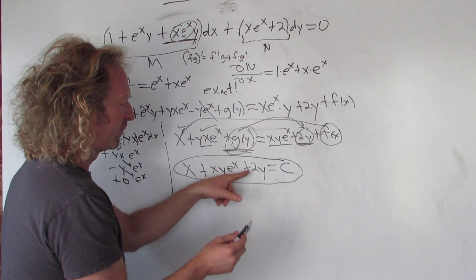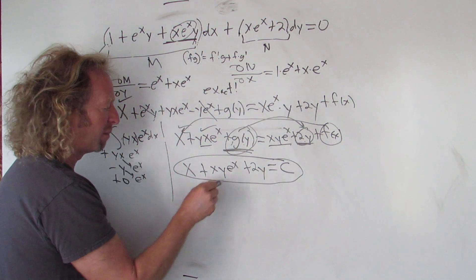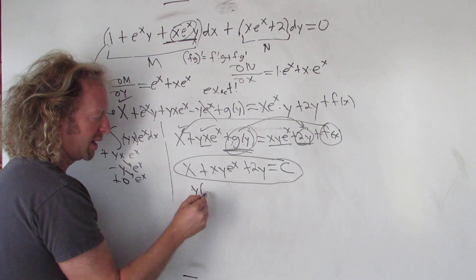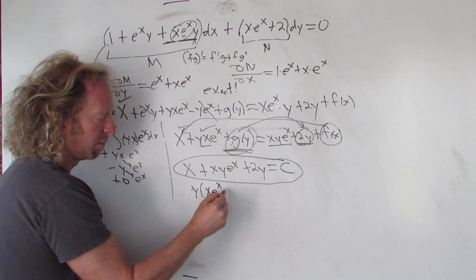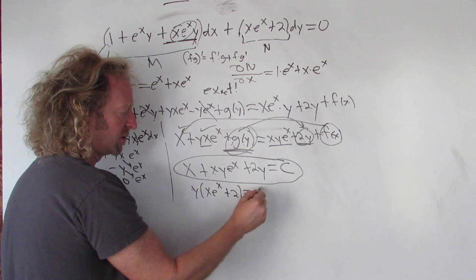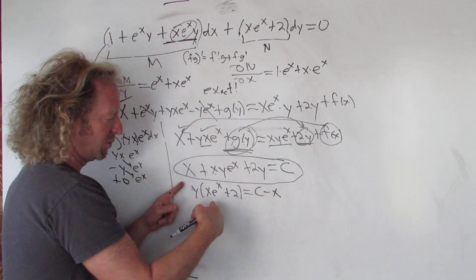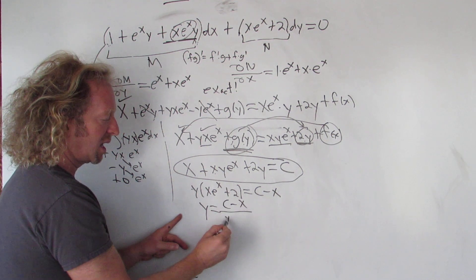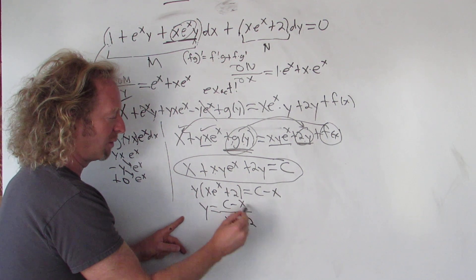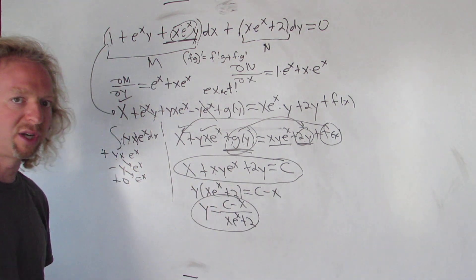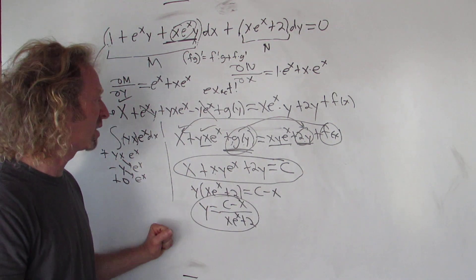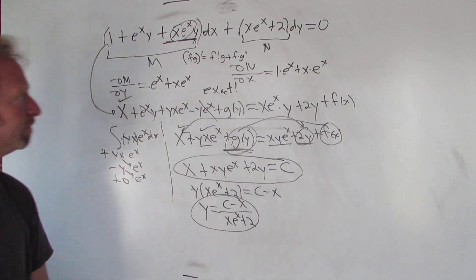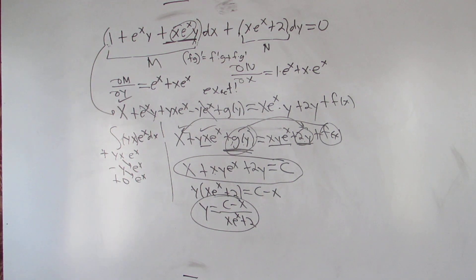If you want to solve explicitly for y, you subtract x and factor out y: y times (x·eˣ + 2) equals C minus x. Then divide through to get y = (C − x) / (x·eˣ + 2). That is an explicit solution to the differential equation. Hopefully that helps someone out there — that's it, thank you.